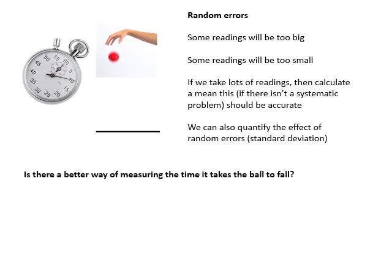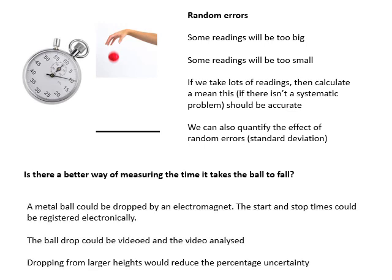One thing you can do is think of a better way of measuring the time it takes the ball to fall. Can you think of a more accurate way of doing it, one that will give you more precise results as well? The obvious one, and this comes up quite regularly in exams, is to do it where human reaction time isn't involved - do it electronically with some kind of gates and switches or perhaps light gates, or use a video. Drop it from a larger height. If you drop it from a larger height, the absolute uncertainty will be the same but the percentage uncertainty will be smaller.